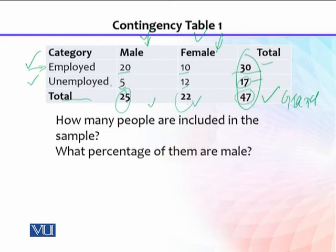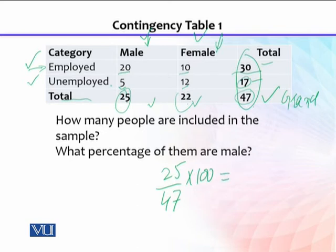The next question is: what percentage of all people are male? We take the number of males, which is 25, divided by the total number of people, which is 47, multiplied by 100. The answer is 53.1 percent. So 53.1 percent of people in this total sample are male. Similarly, you can calculate what percentage of people are female, and how many percent are employed or unemployed.